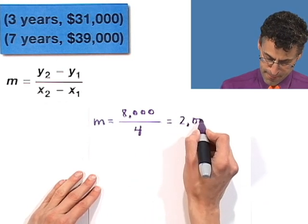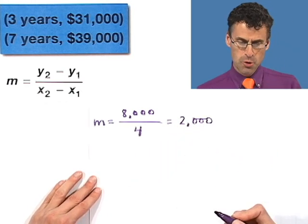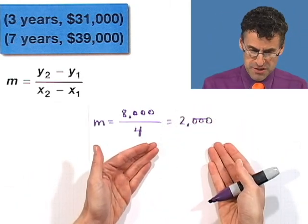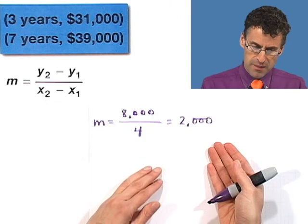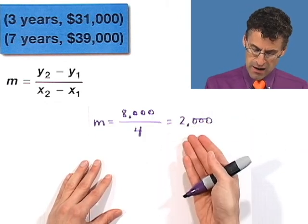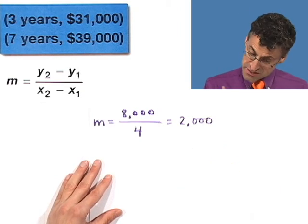So the slope is 2,000. And what does that mean? What does it mean to have a slope of 2,000? It means that the painting is appreciating at a rate of 2,000 per year.